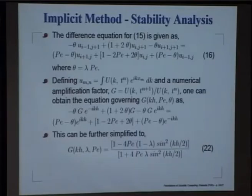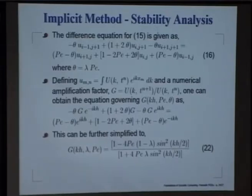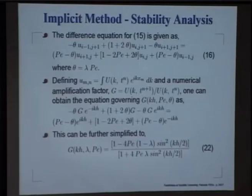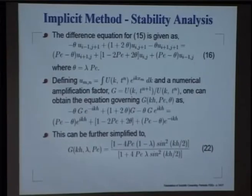Why take the trouble of going from an explicit method to an implicit method if we do not get a dividend? We need to find out what we gain, and the best way is to look at stability properties. We recall that apart from accuracy, we also need to ensure numerical stability — for example, if you take too few grid points in the explicit method, the solution just blows up. That is numerical instability.